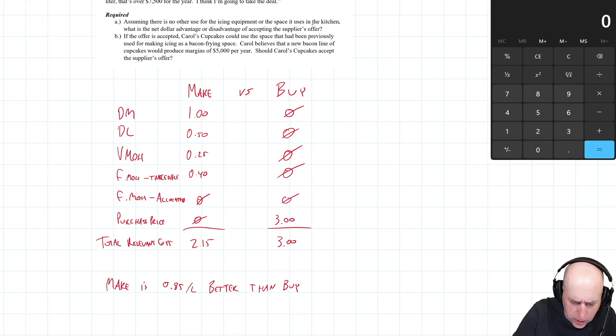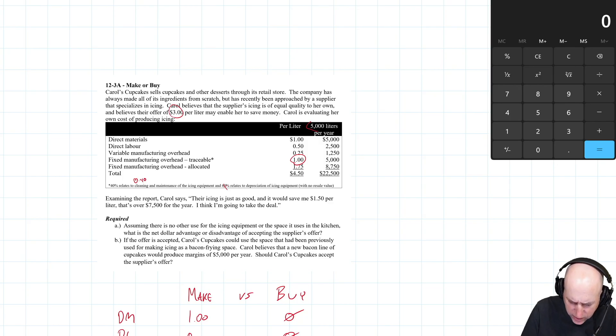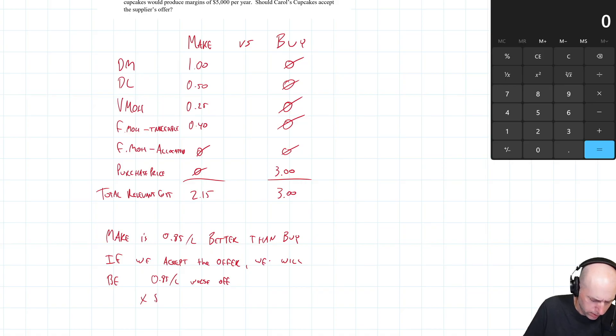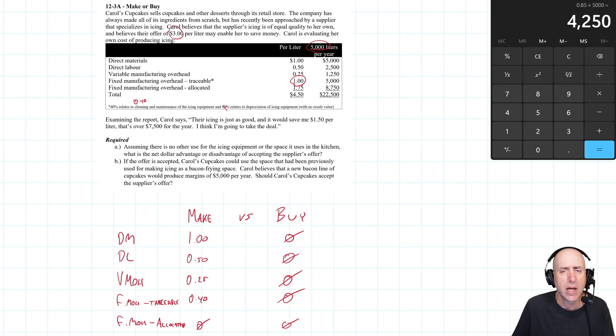Let's read the question. It says, assuming there's no other use for the icing equipment or for the space in the kitchen, what's the net dollar advantage or disadvantage of accepting the supplier's offer? So if we accept the offer, we are 85 cents per liter worse off. And what is that overall? How many liters are we moving here? 5,000 liters. So times 5,000 liters, 0.85 times 5,000, $4,250 worse off overall. So do we do it? No, right. We're $4,250 worse off if we do it.